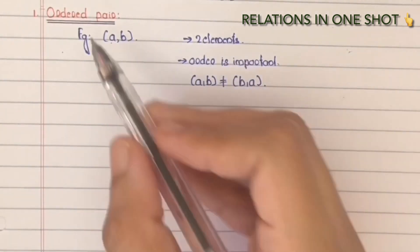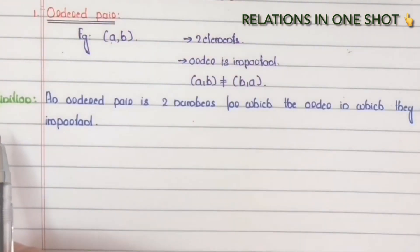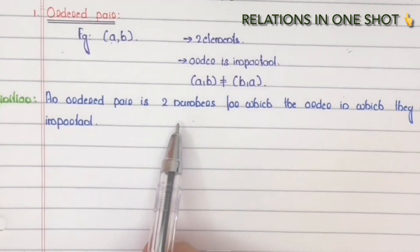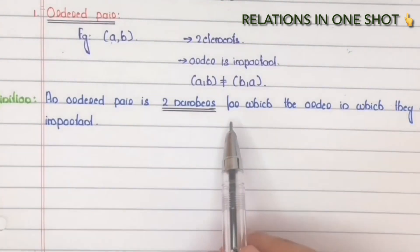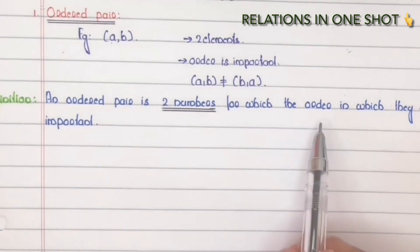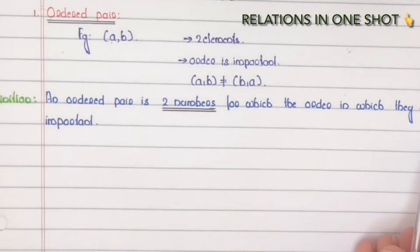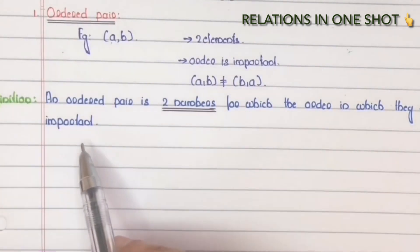So definition: an ordered pair is two numbers for which the order in which they are given is important.